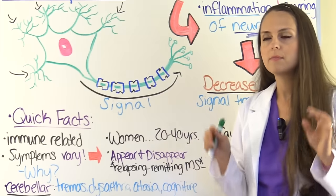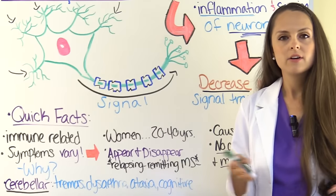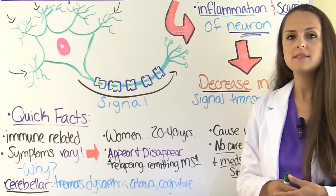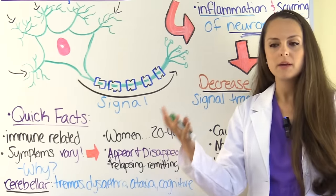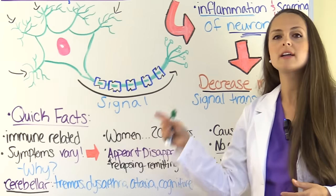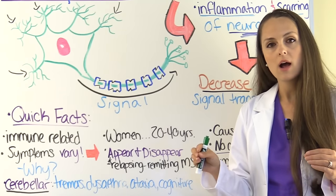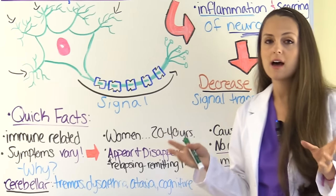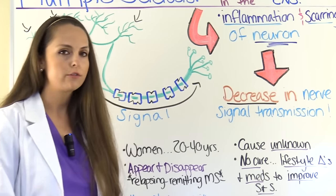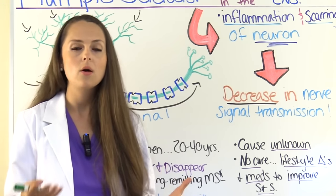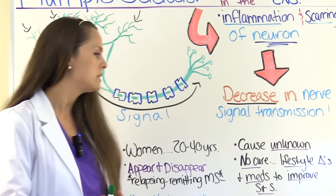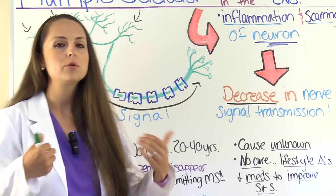The most common form of MS is relapsing-remitting MS, where symptoms appear and then disappear — the patient goes back into remission. MS tends to affect women more than men and typically strikes between the ages of 20 to 40. The cause is unknown and there is currently no cure. However, lifestyle changes can help prevent worsening of symptoms, and medications can be prescribed to improve signs and symptoms.